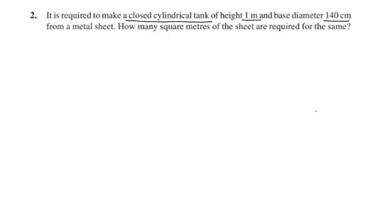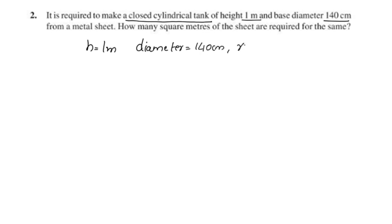This is a closed cylinder, closed at both the bottom and top, so we use the total surface area formula: 2πr(h + r). The height is 1 meter and the diameter is 140 cm, so the radius is 140 by 2 equal to 70 cm.